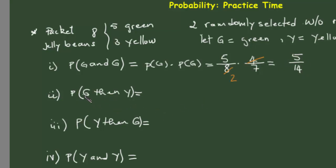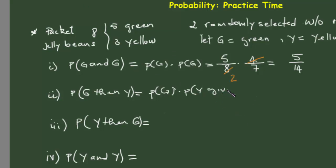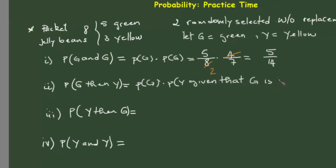The second one: the probability of G then Y. This is a dependent event because we first need to select green, and only then can we select yellow. So we write this as the probability of G, times the probability of Y given that G is selected.